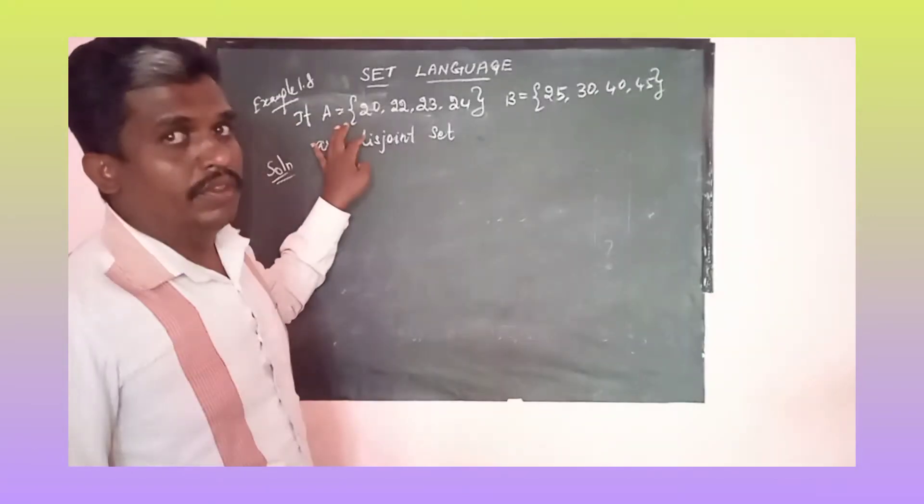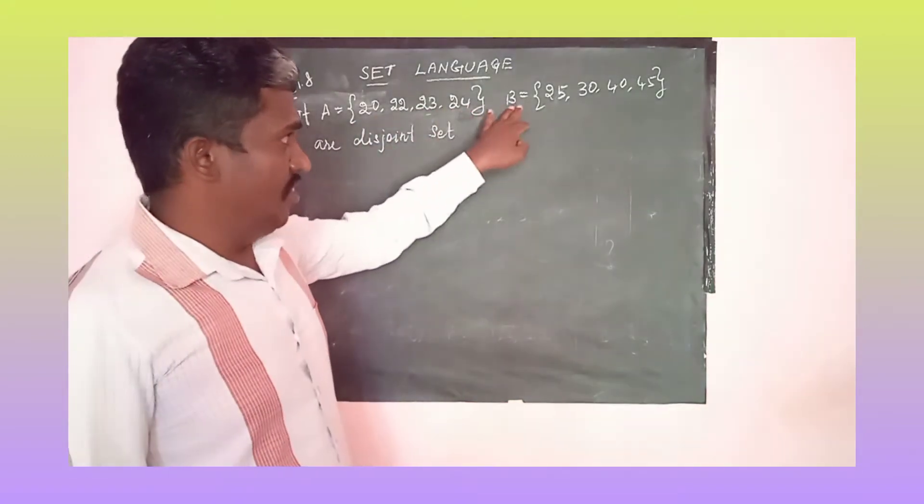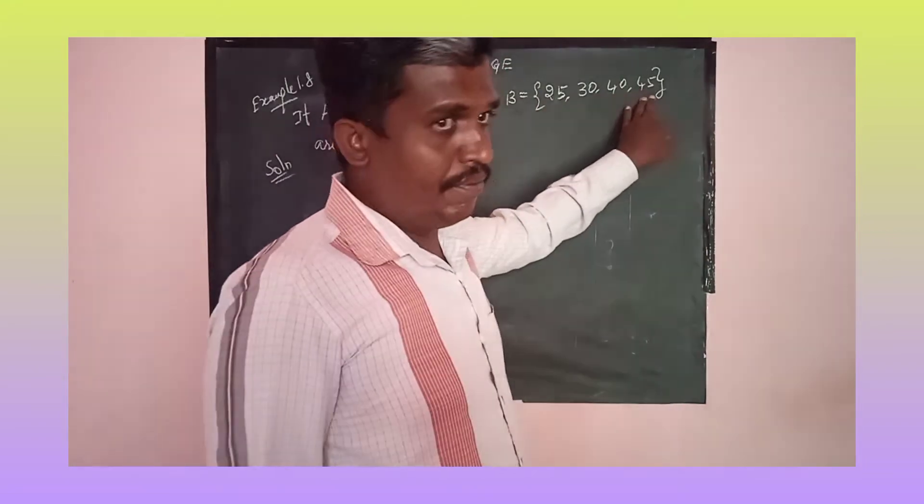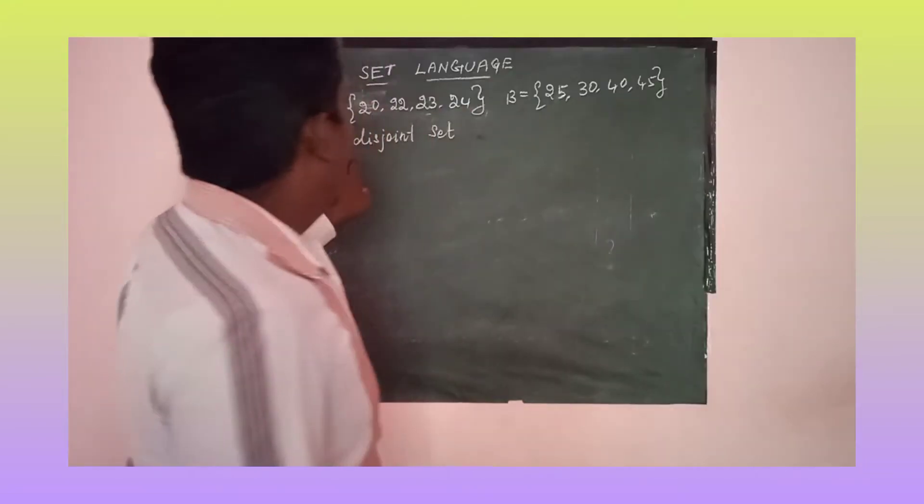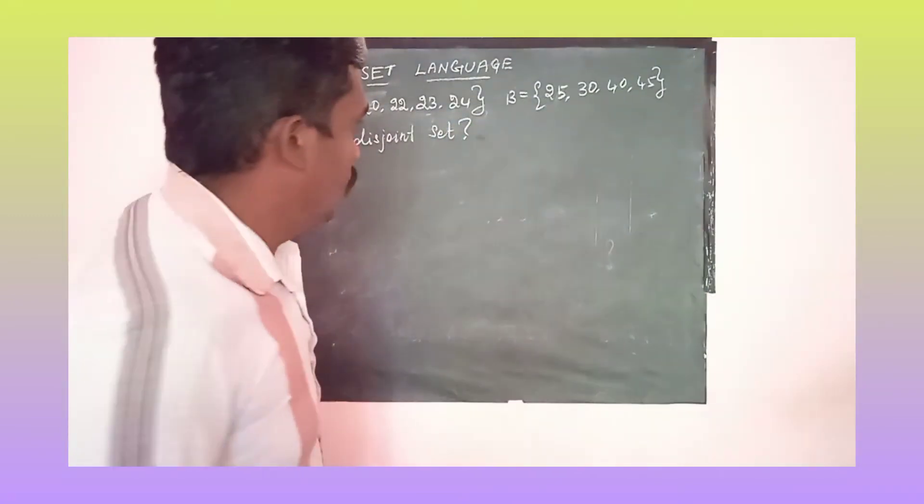If A is equal to 20, 22, 23, 24, and B is equal to 25, 30, 40, 45, are they disjoint sets? This is the question.